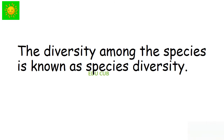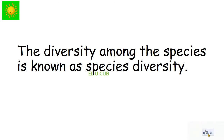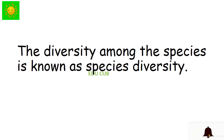Think about the living organisms in an ecosystem. In an ecosystem, there are many species of animals and plants as well as many species of microorganisms. With regard to these species, there is a great variety of characteristics in body shape, size, nutritional patterns, and reproduction. The diversity among the species is known as species diversity.